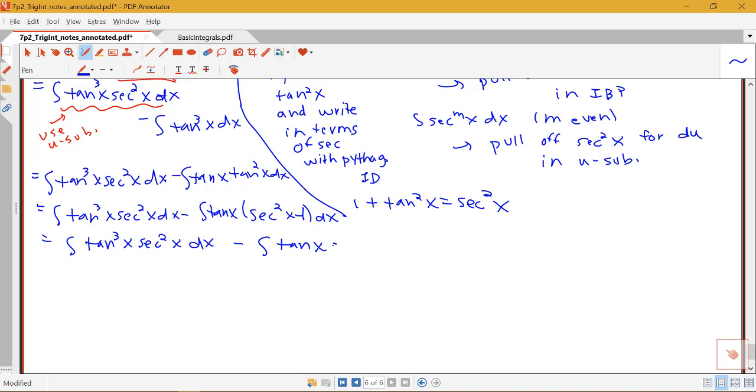...so I have minus this integral of tan x secant squared x dx. And then notice that if I distributed the tan x to the minus 1, that would be minus tan x, but I've got this minus on the outside, so I'll have plus an integral of tan x dx.